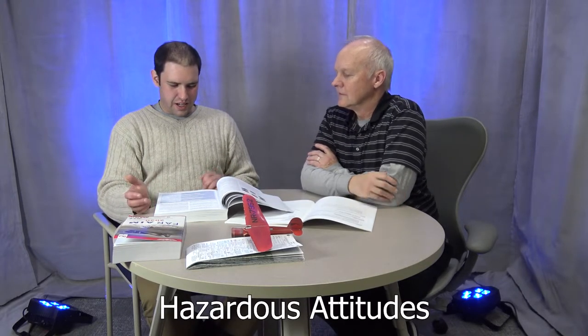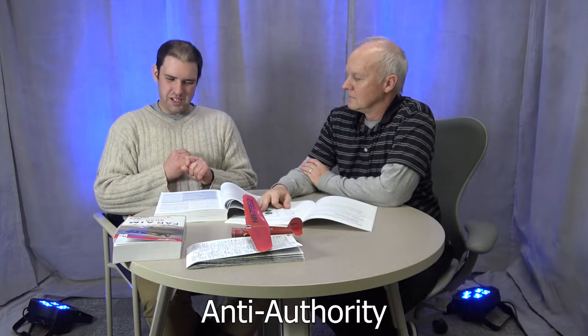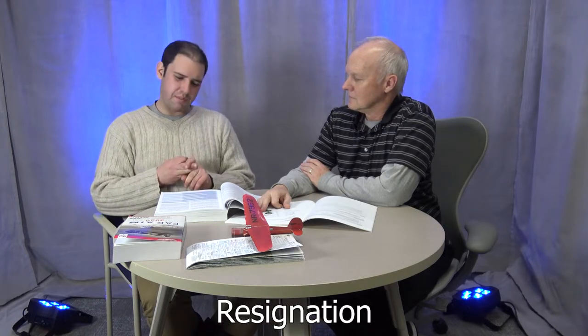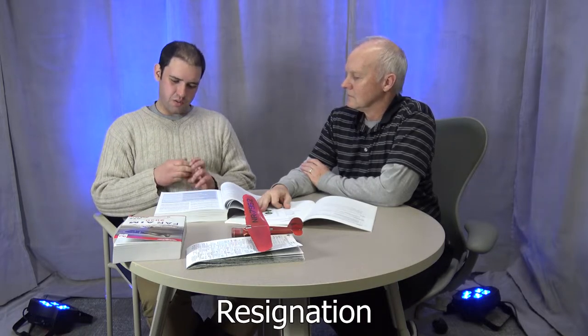So, yeah, they have five of them, anti-authority, their example is don't tell me, impulsivity, do it quickly, invulnerability, it won't happen to me, macho, I can do it, or resignation, what's the use? Yes. So, I've seen pilots at all levels exhibit these to one extent or another, and part of the challenge is, in the moment, if you're experiencing one of these attitudes, it can be very hard to sort of step outside yourself and say, I need to think about this differently.